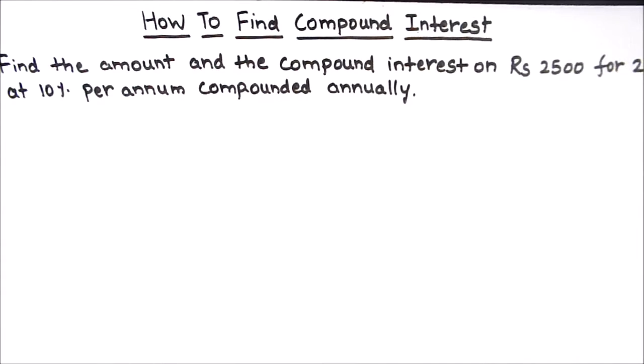Hello students, in this video we are going to learn how to find annual compound interest. The question is: find the amount and the compound interest on rupees 2500 for two years at 10% per annum compounded annually.